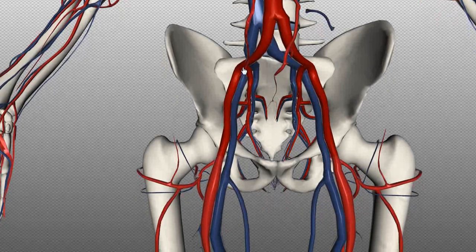Just like the carotid arteries, this then splits into the external and the internal iliac arteries.